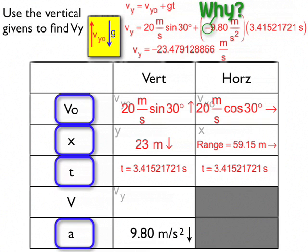So on my data table, I'm going to write 23.4691306 meters per second going downwards with my down arrow.